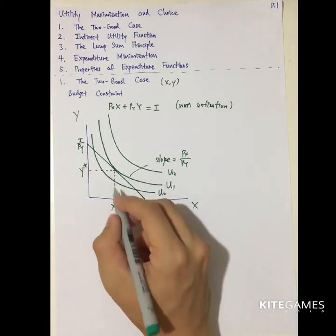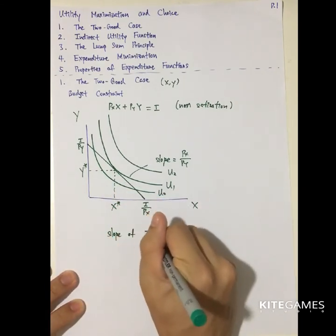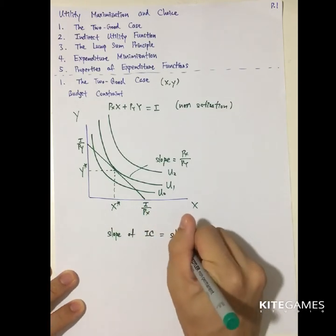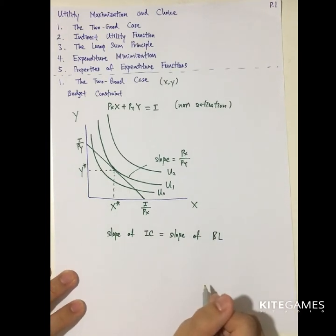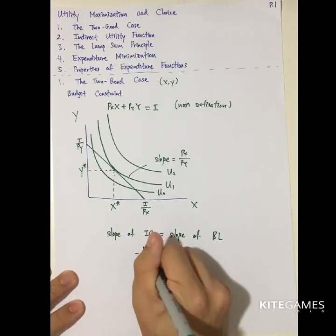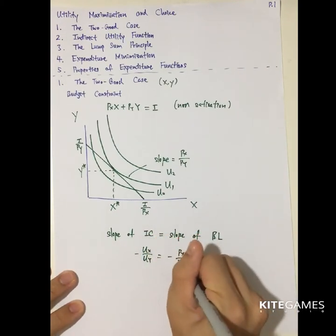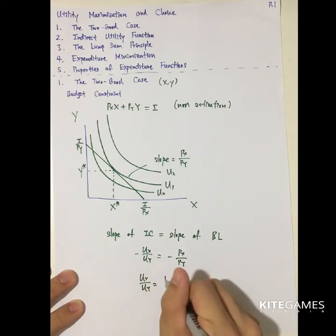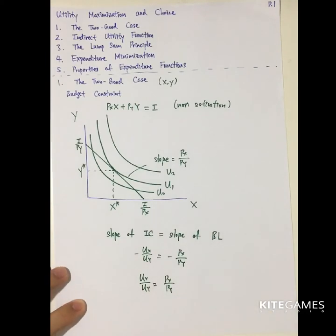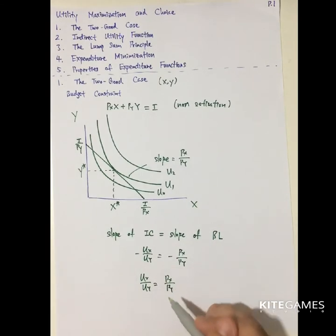Utility is maximized when the slope of the indifference curve equals the slope of the budget line. The slope of the indifference curve is negative Ux divided by Uy, and the slope of the budget line is negative Px divided by Py. So the maximizing condition in the two good case is Ux over Uy equal to Px over Py.